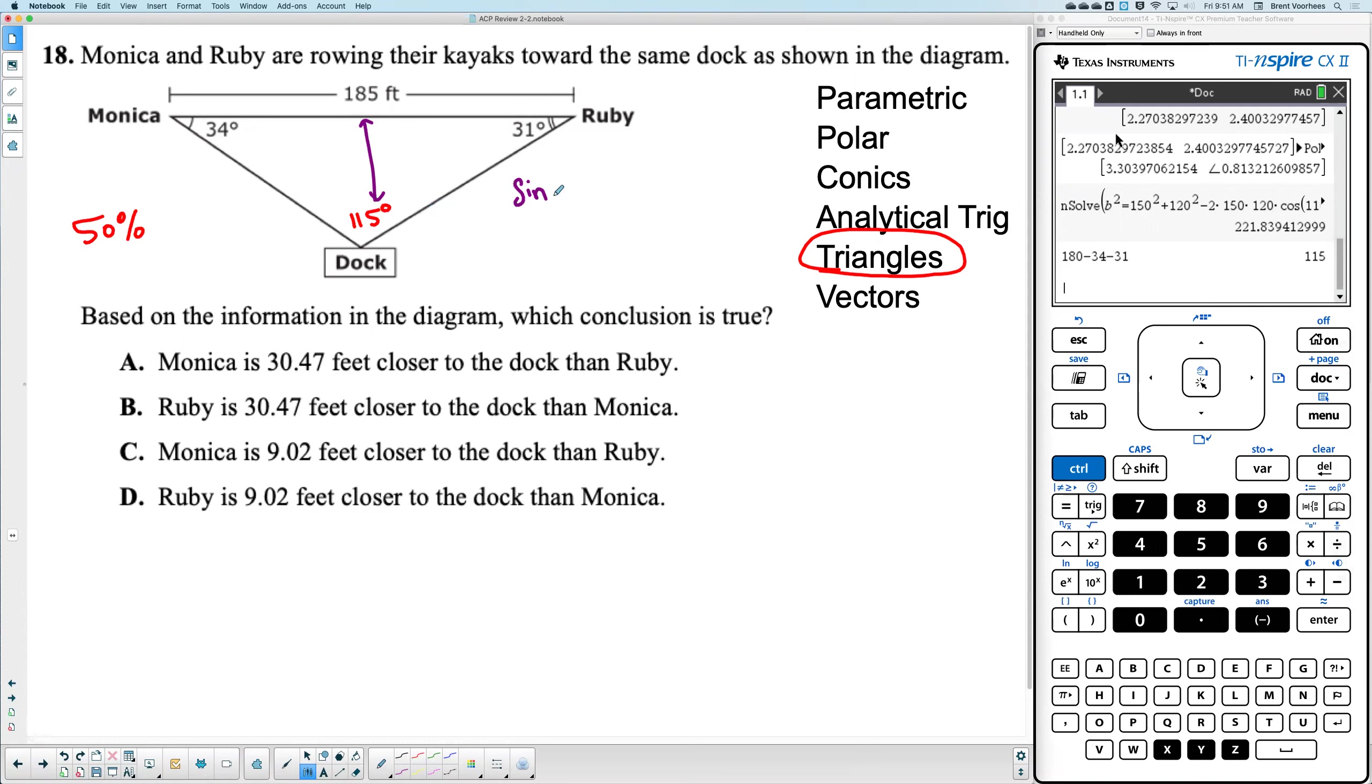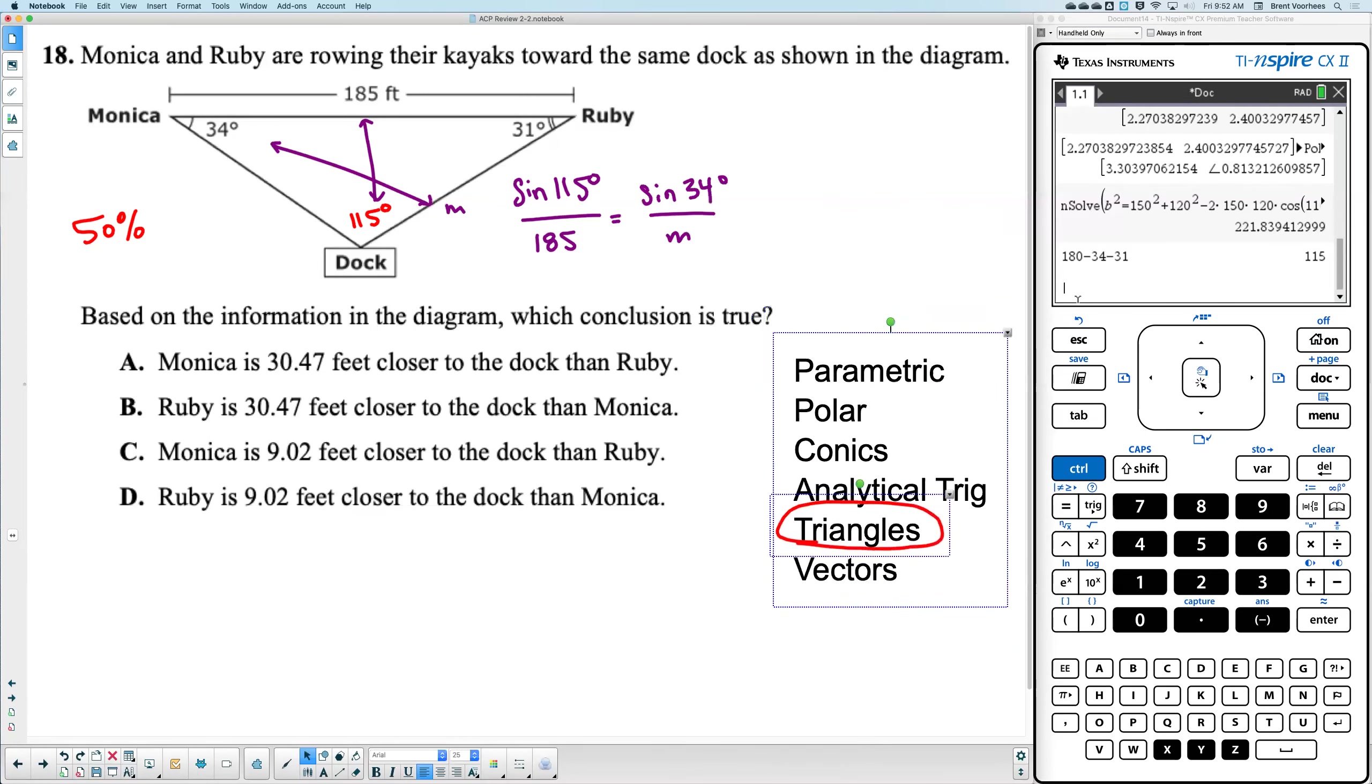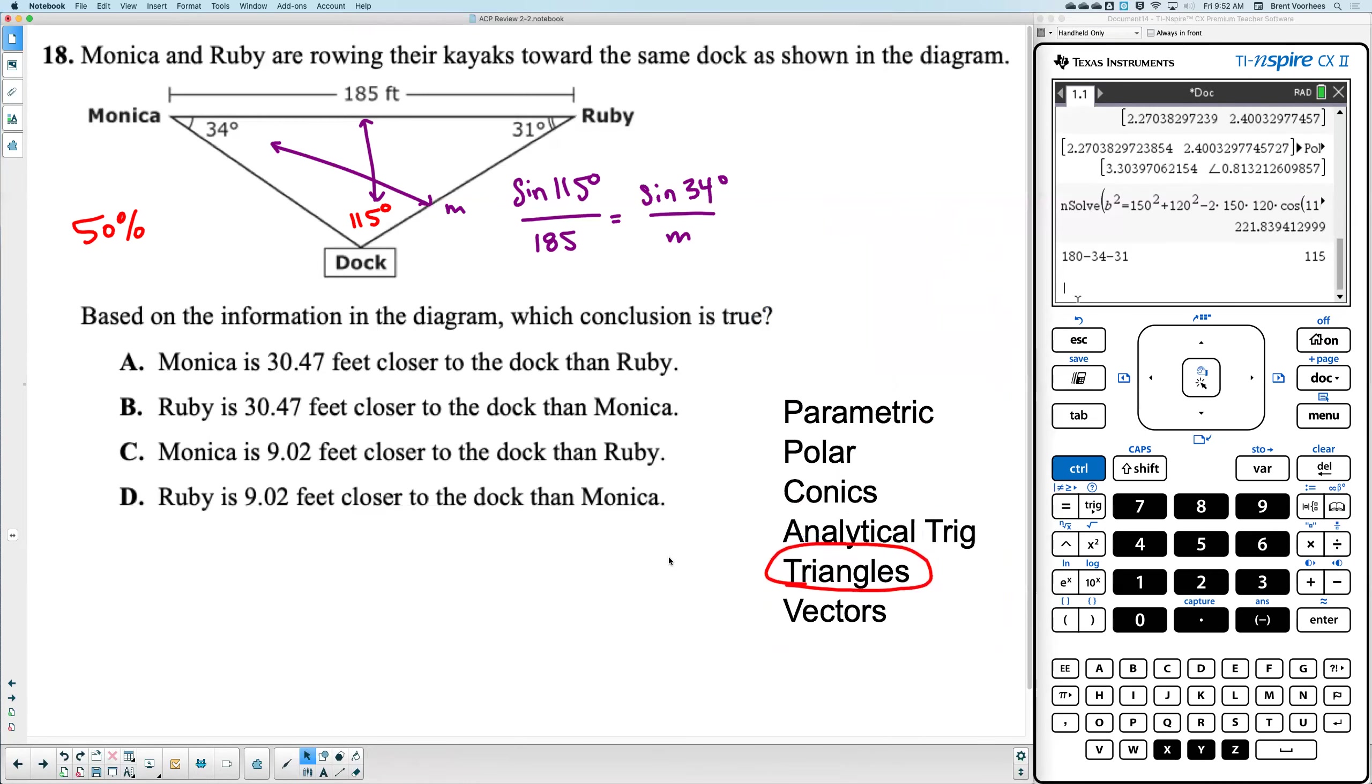So that means sine of 115 degrees divided by 185 will equal either of the other two pairs. So I'm going to set the sequence. Which one do you want to solve for first? The side across from Ruby or the side across from Monica? Monica? Okay, let's find this one here. I'm going to do a little m. So that would mean that sine of 34 over m. I'm going to end up moving this here.